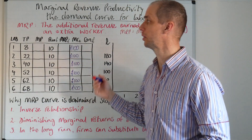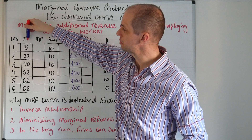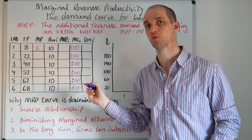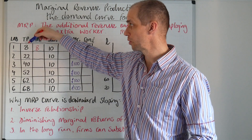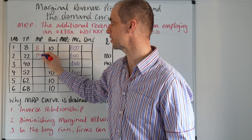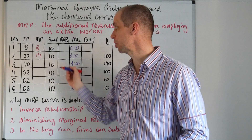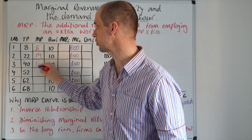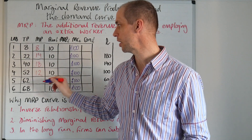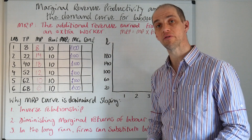Let's work out our marginal product. As we go from zero to one worker, total product goes from zero to eight, so the marginal product of the first worker is eight. From one to two labourers, total product goes from eight to 22, so the additional output from that second worker is 14. Then our next would be 18 — from 22 to 40 — then 12 from 40 to 52, then 10 from 52 to 60, and finally six.